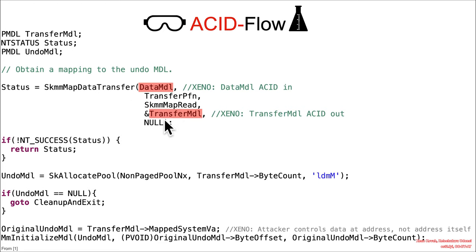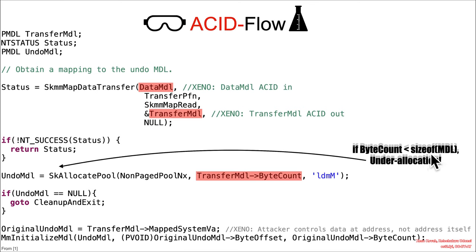The transfer MDL is going to be attacker controlled, so the transfer MDL byte count is one of those many fields that is fully attacker controlled. If this ExAllocatePool has an attacker controlled byte count that ends up being less than the size of an MDL, that means this allocation is going to be too small. An MDL needs at least hex 30 bytes, but what if this says 10 instead of 30? That means when you try to fill this in, you're going to be going out of bounds of those 10 bytes that were allocated.